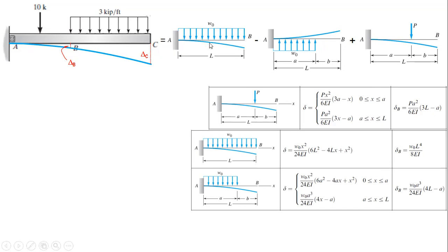For the uniform load component, P equals 10 and the span is 25. Using the formula with x equal to 20 for point B, we apply: omega times x-squared over 24EI times (6L-squared minus 4Lx plus x-squared), and then subtract the partial load correction term.